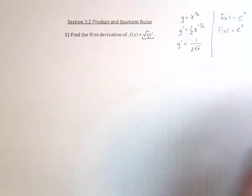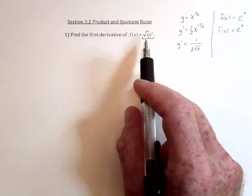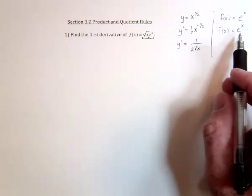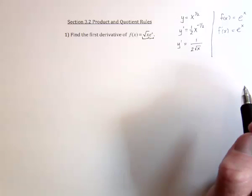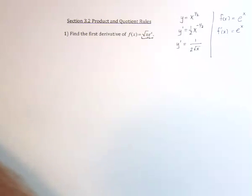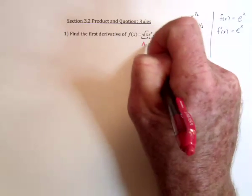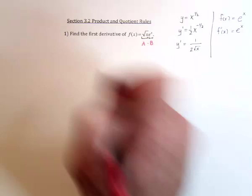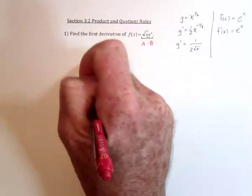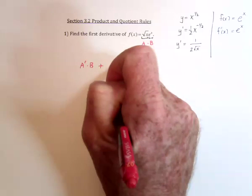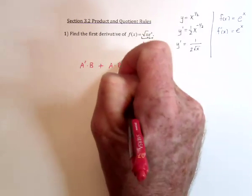But when we take the derivative of a product, you have to take the derivative of each one, but only one at a time. So the product rule would say, if this is a times b, then take the derivative of a but leave the b alone, plus leave the a alone while you take the derivative of the b.